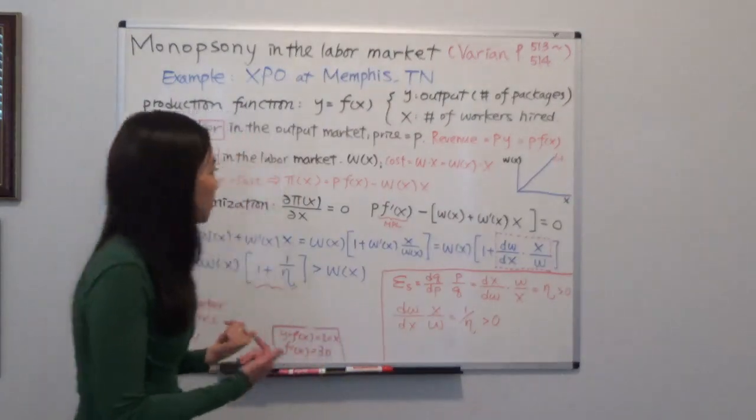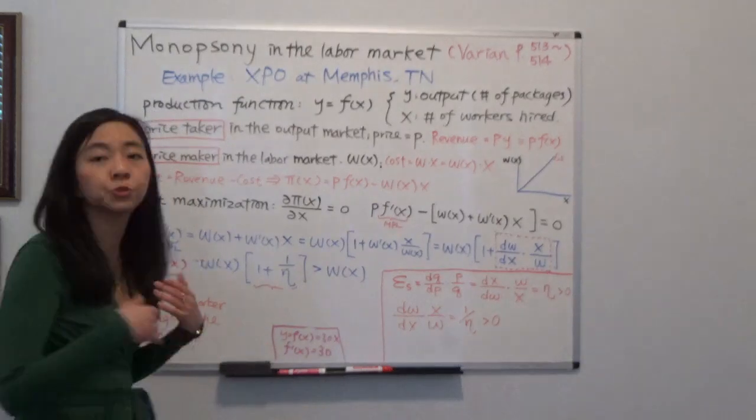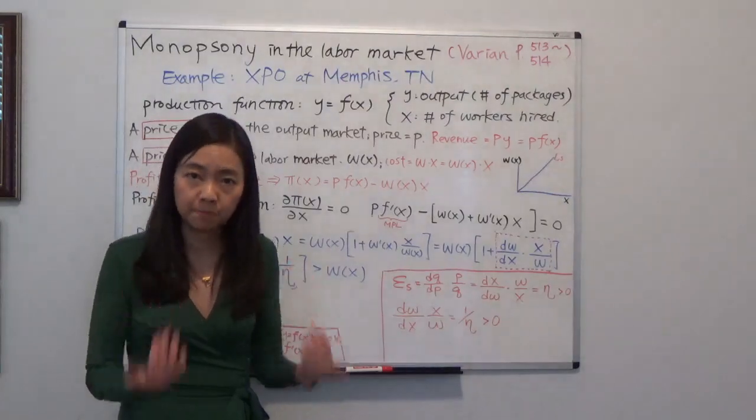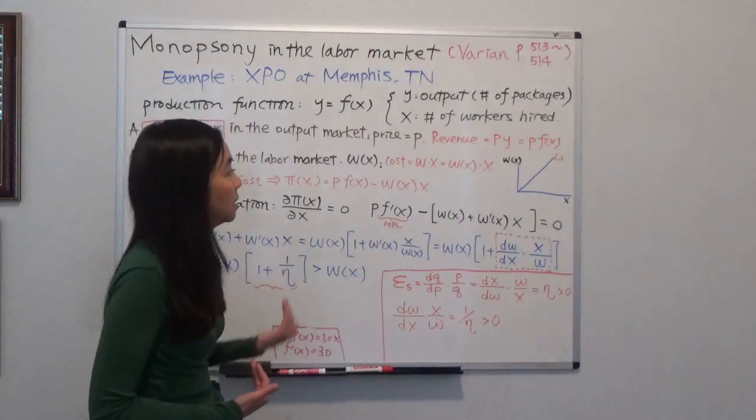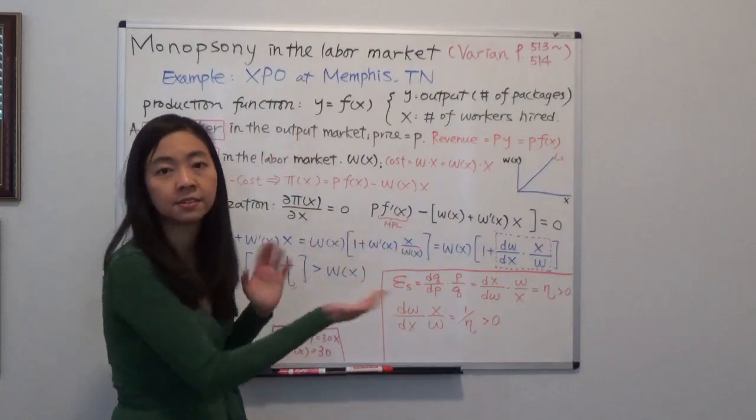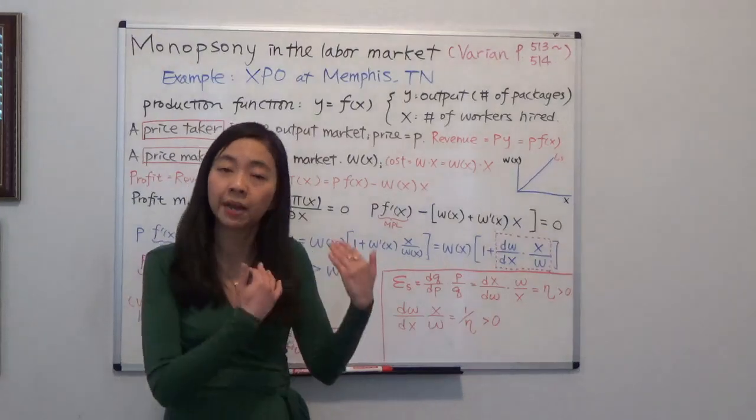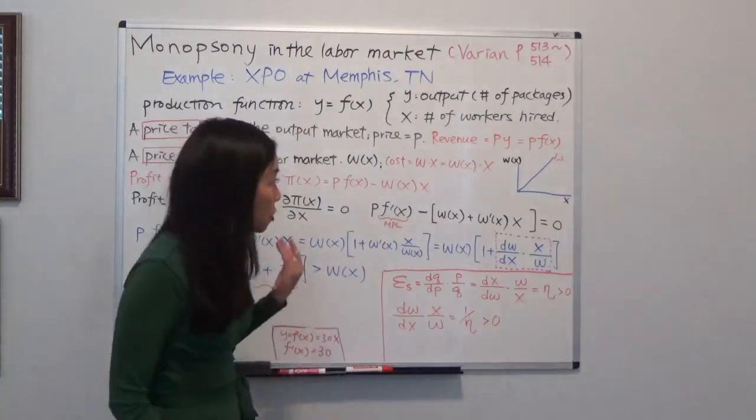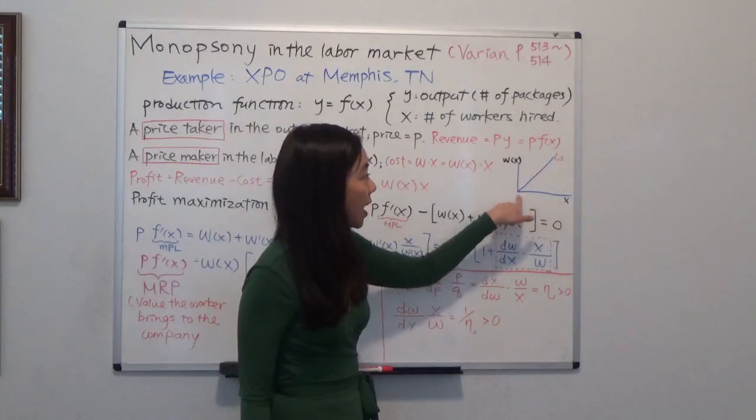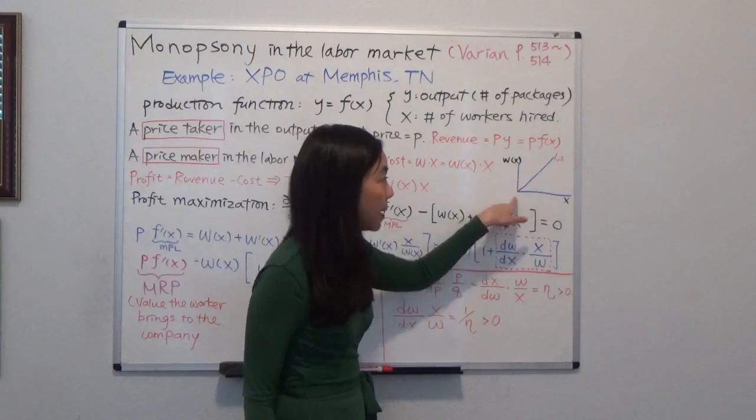What about your cost? Suppose you only hire workers and there are no other costs, just to simplify that. So now, in the labor market, you are a price maker because you are the only buyer in the labor market, say XPO in the east side of Memphis. So in that case, you are facing the labor supply curve by yourself. So you don't take the wage as given. In fact, the more workers you hire, the higher wage you have to pay because the supply curve is positively sloped.